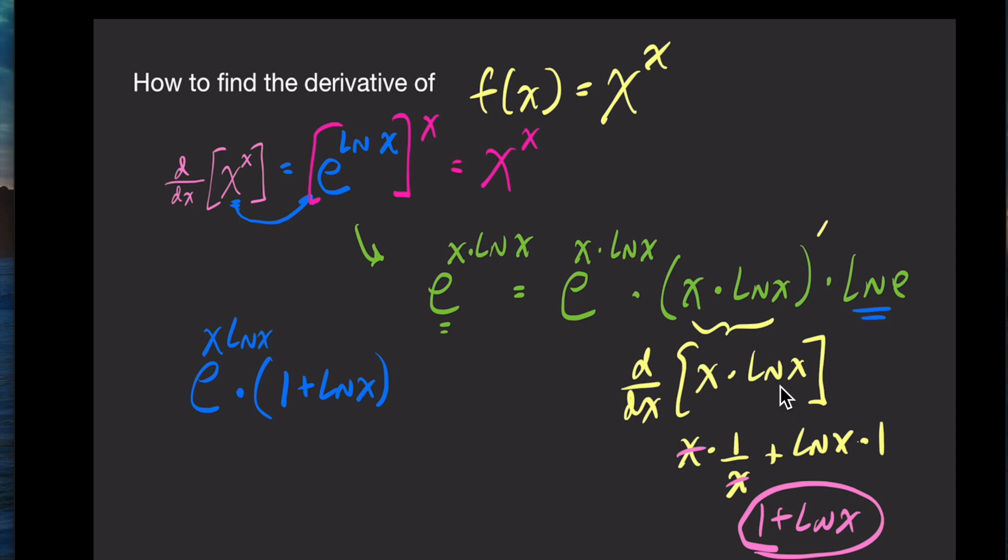All right, let's go ahead and rewrite everything over here to the left. We now have e to the x ln of x times 1 plus ln of x times the ln of e, which is just 1. Okay, folks, now don't forget, we changed this here. Originally, we have x to the x equals e to the x ln of x. So now we can go back and back substitute and change that back to its original form. And this is our final answer.